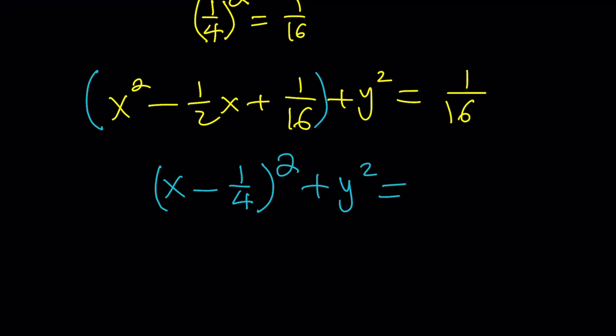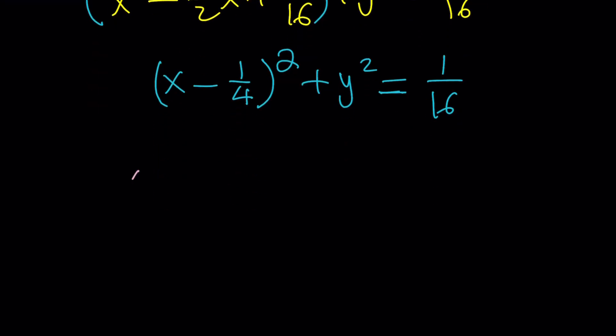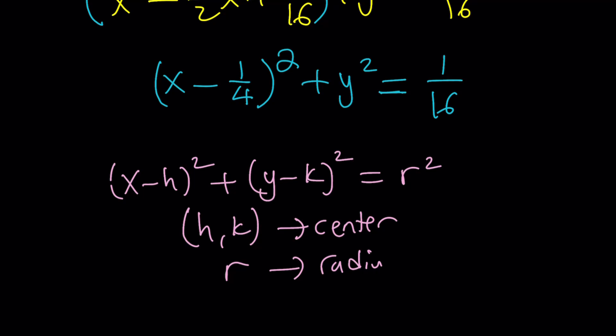Obviously, you can tell by the term you're adding. And you can always check with the formula, right? All right. Great. So this is our circle. And if you remember, the formula for a circle is x minus h squared plus y minus k squared equals r squared, h comma k being the center of the circle, and r being the radius of the circle.